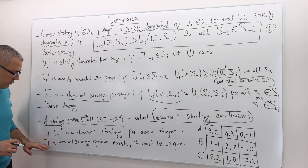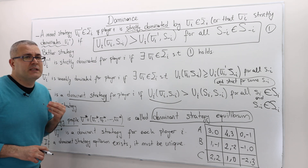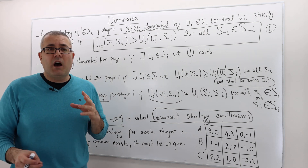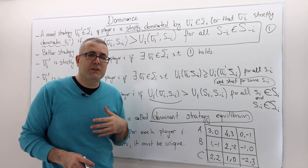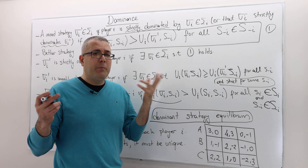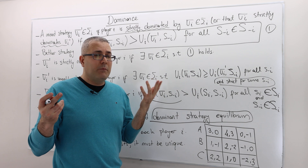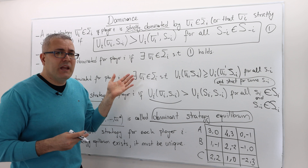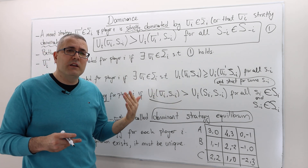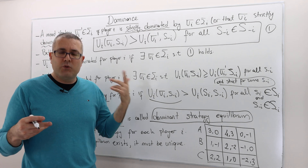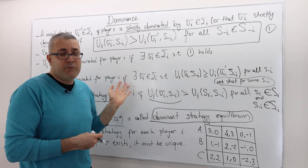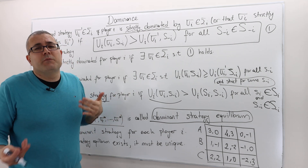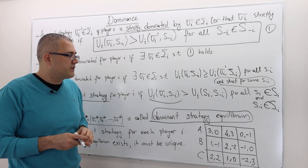There's one important note: if a dominant strategy equilibrium exists — in many games it doesn't exist, but if it exists — it must be unique. Because you can't have two best strategies. If you did, your payoff under both would have to be the same, but strict domination does not allow equality. So you can have at most one best strategy, and the same holds for all other players. Therefore, if a dominant strategy equilibrium exists, it must be unique.